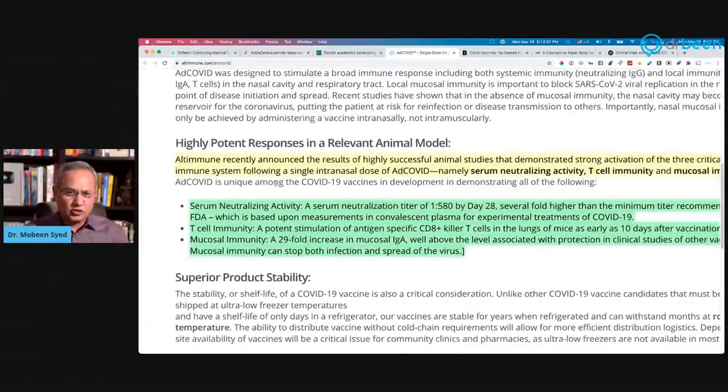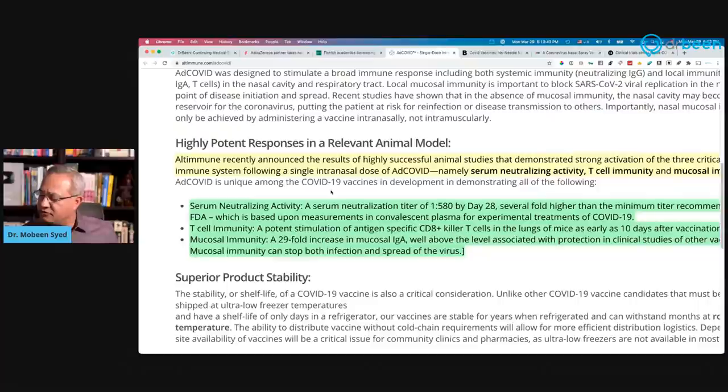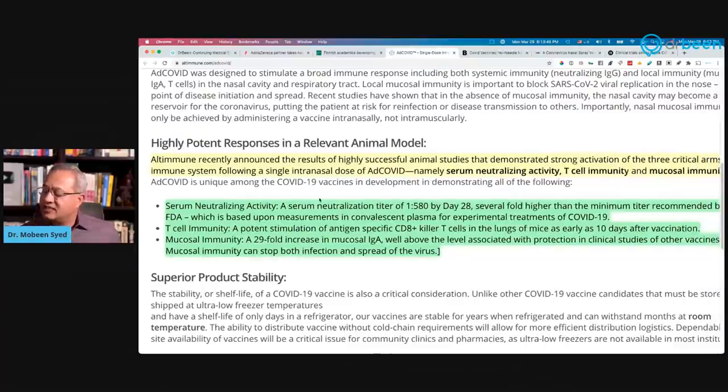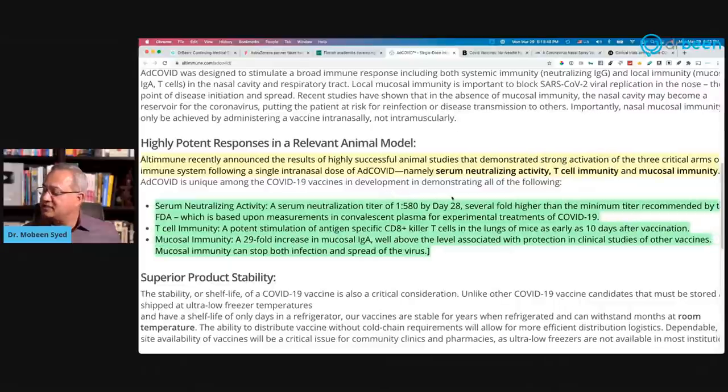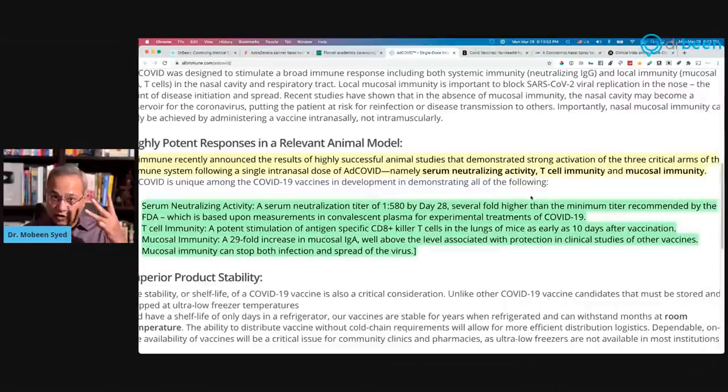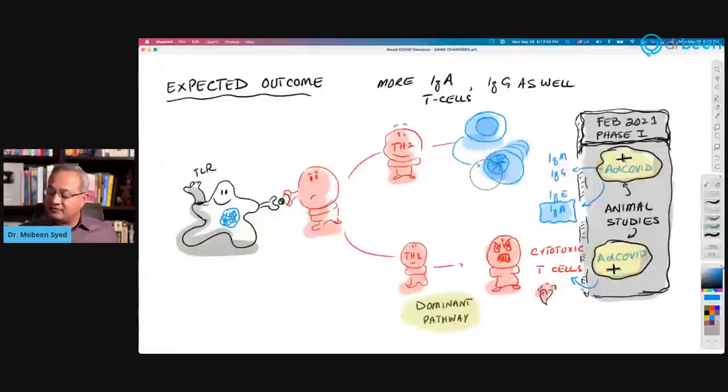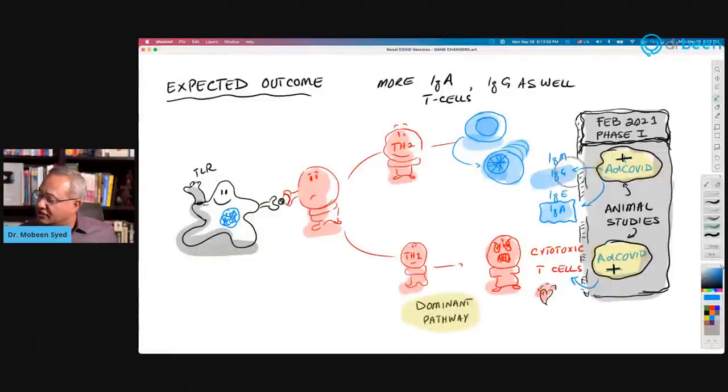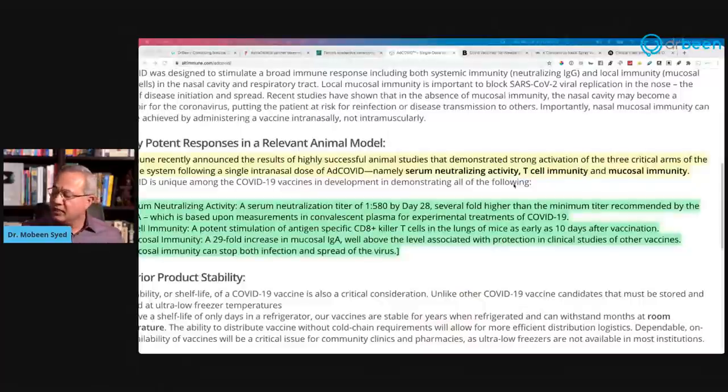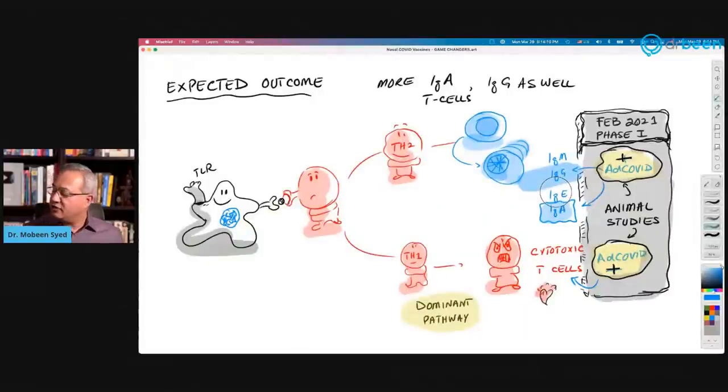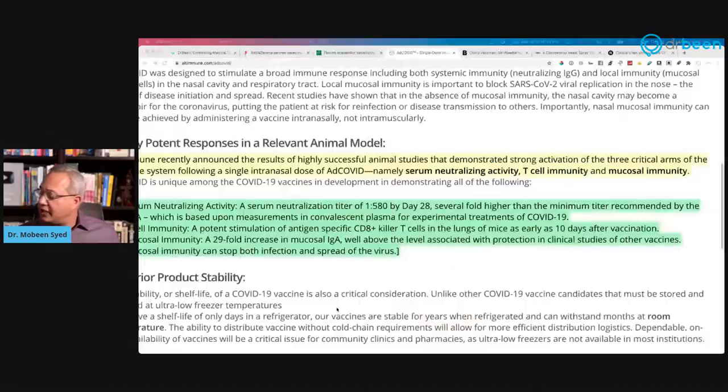Although there are not three critical arms, there are two arms. But they've taken some liberty with the words there. With the immune system following a single intranasal dose of AdCOVID, namely serum neutralizing activity. So they are calling these three the arms. Neutralizing activity, that means production of IgG against spike protein, that is adaptive arm. Then T cell immunity, and T cell immunity will mean cytotoxic T cell plus memory helper cells. That also is part of the adaptive arm.